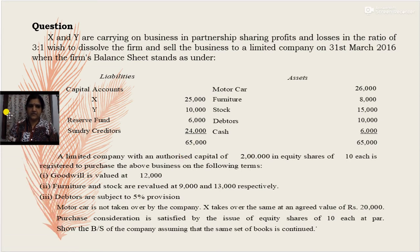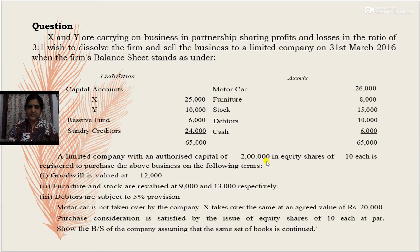The liabilities include capital accounts: X Rs. 25,000 and Y Rs. 10,000, reserve fund Rs. 6,000, sundry creditors Rs. 24,000, and the balance sheet total is Rs. 65,000. A limited company with an authorized capital of Rs. 2,00,000 in equity shares of Rs. 10 each is registered to purchase the above business on the following terms: goodwill is valued at Rs. 12,000, furniture and stock revalued at Rs. 9,000 and Rs. 13,000 respectively.